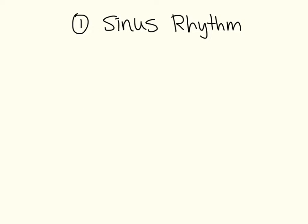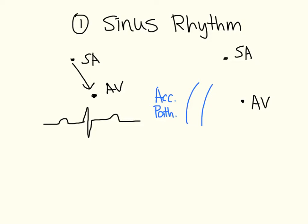The first scenario is sinus rhythm. In a normal heart, impulses go from the SA node down to the AV node, there is a slight pause, and then the ventricles depolarize. In a patient with an accessory pathway, the impulses travel from the sinus node to the AV node, but also through the accessory pathway. The accessory pathway does not have the stopping that the AV node does, so there is no pause. Therefore, the ventricles depolarize through the accessory pathway just a little bit faster than the normal pathway. Since it does not go through the normal conduction pathway, the QRS complex would be wide.